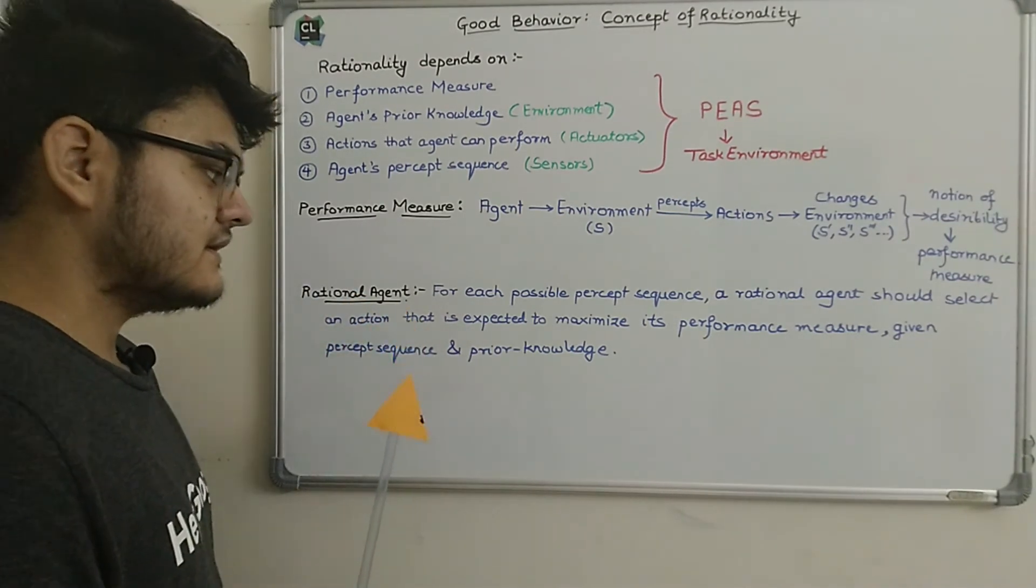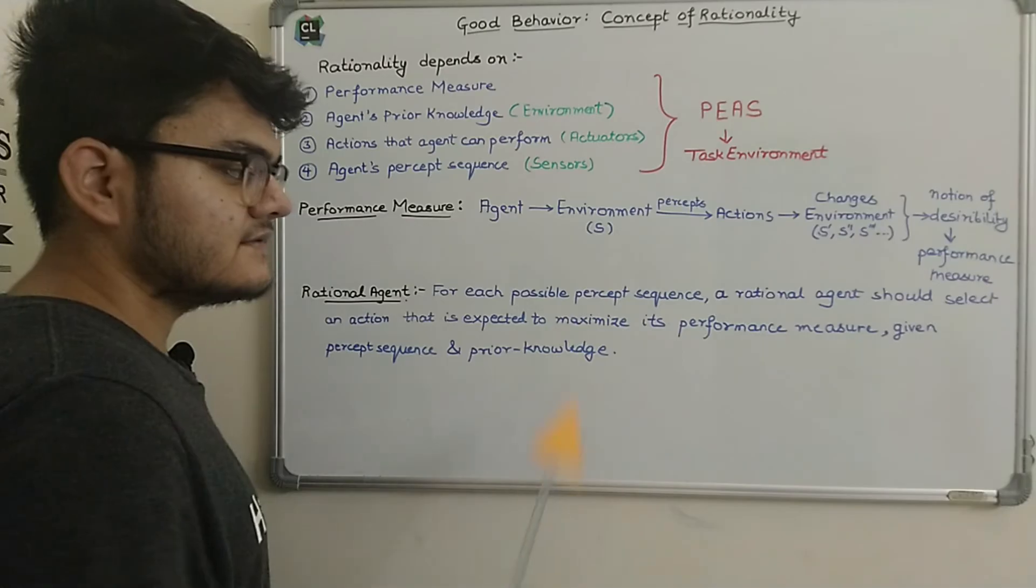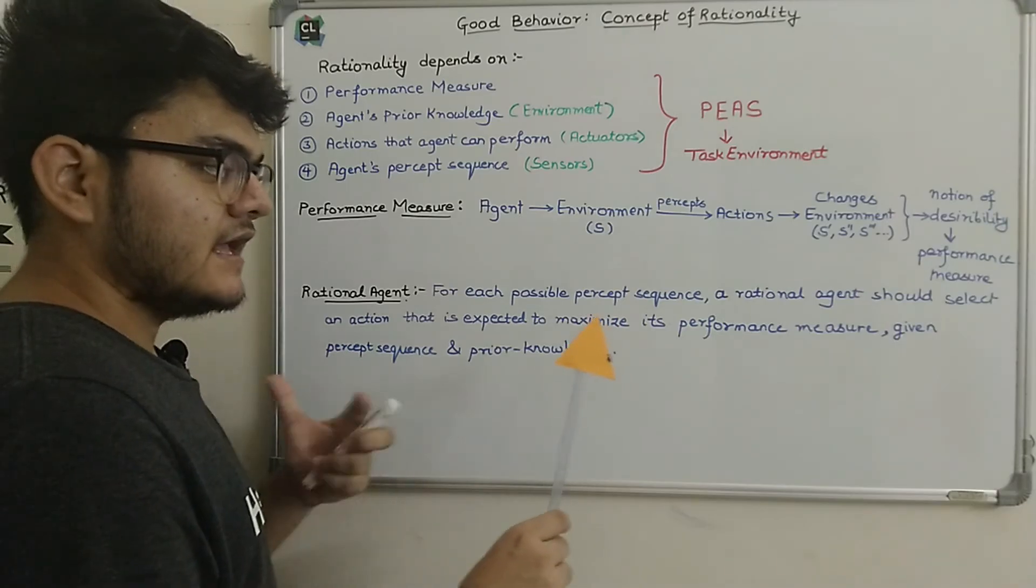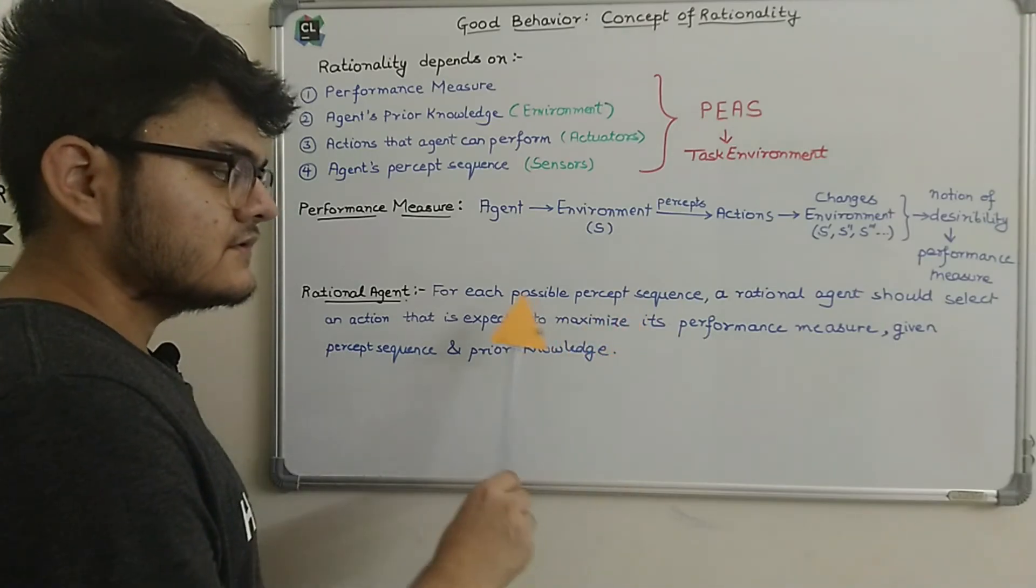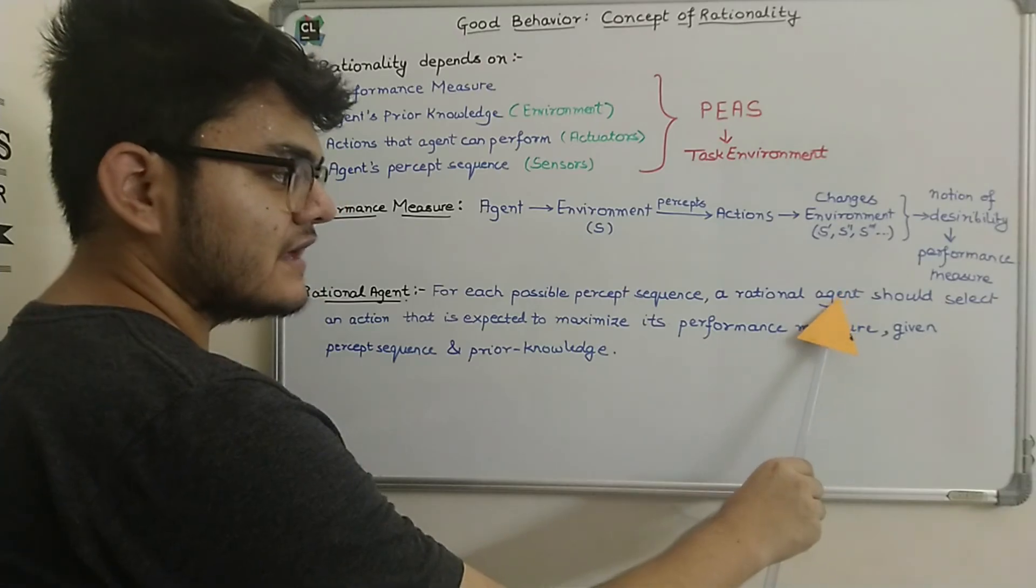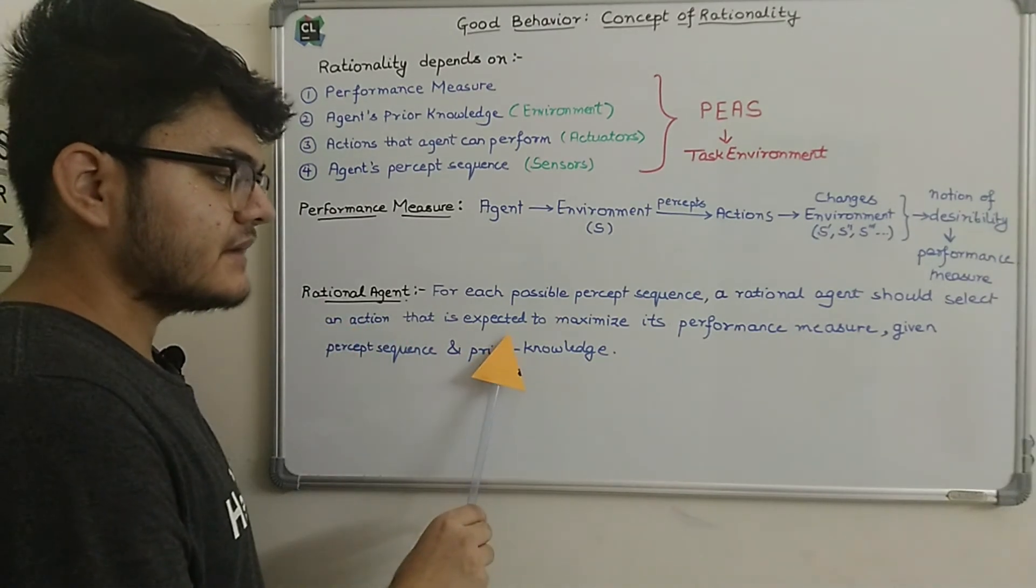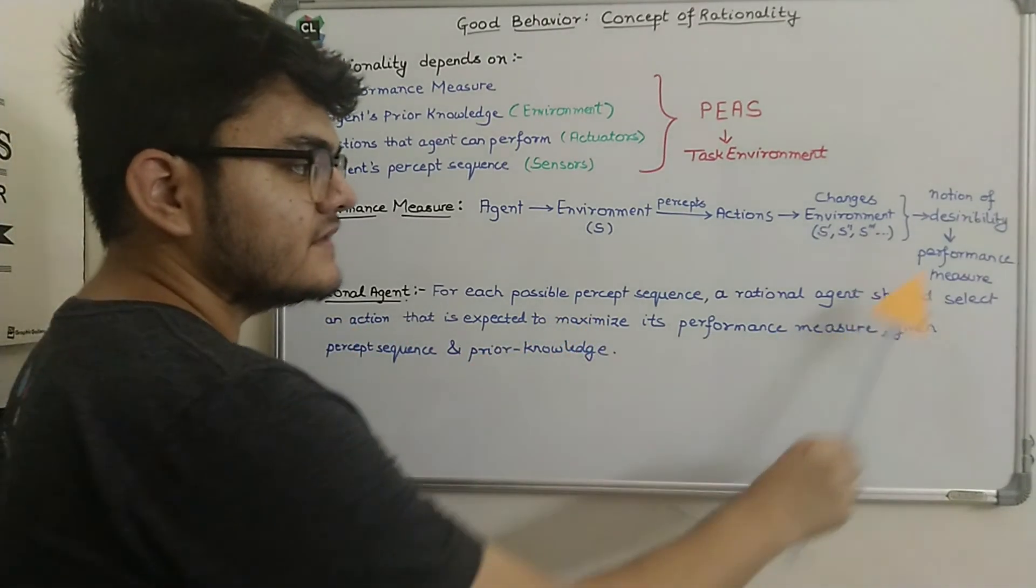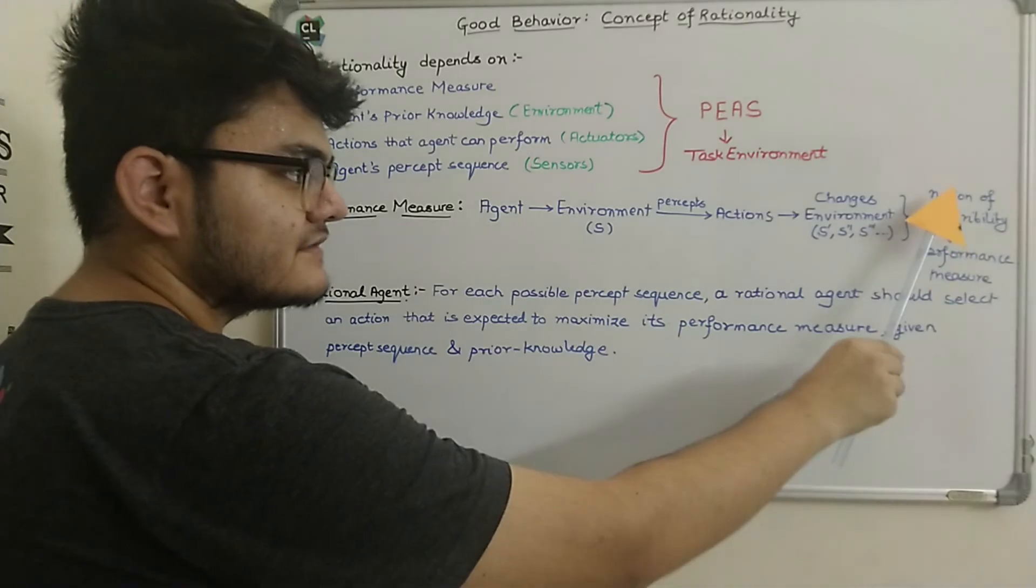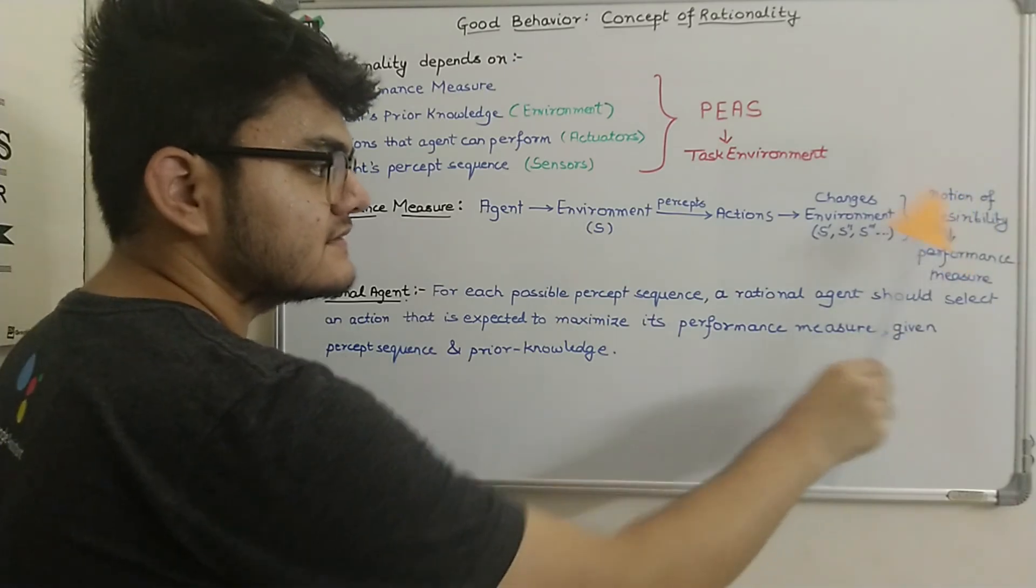A rational agent, for each possible percept sequence—we know that percept sequence comes from the history of the agent which it has perceived before—so for all the possible sequences that we have, a rational agent should select an action that is expected to maximize its performance measure. Maximizing performance measure just basically means you are maximizing the notion of desirability, which means you are actually performing the desired actions.